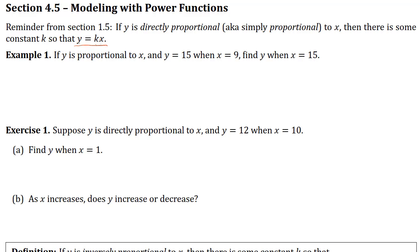Let's look at example one. If y is proportional to x and y is 15 when x is 9, let's find y when x is 15. When we say y is proportional to x, that means the equation that relates y and x is going to look something like y equals k times x. But we can't really answer the question, how to find y when x equals 15, just based on this because we don't know what k is.